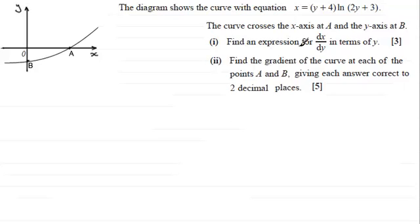So for this first part where we've got to find dx by dy, we should be able to go straight into this. And what we've got to use is the product rule for differentiation. Normally we have y equals two functions of x being multiplied together. It's kind of back to front here. But essentially our two functions, not of x but of y this time, that are being multiplied together are y plus 4 and the natural log of 2y plus 3.